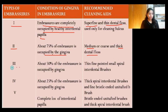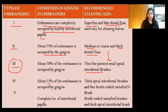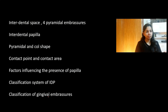In a Type 3 scenario, 50% of the embrasure is filled with gingiva and 50% is unoccupied, so the space is larger and a thin interdental brush can fit — we move from dental floss to an interdental brush. In a Class 4 scenario, only 25% of the embrasure is occupied by gingiva, so a thick spiral interdental brush or uni-tufted brush is needed. In the last scenario — complete loss of the interdental papilla — we advocate use of a thick spiral interdental brush or multi-tufted brushes.